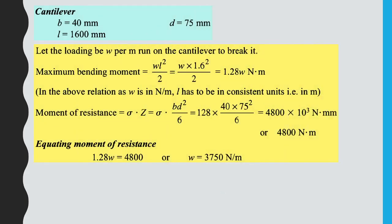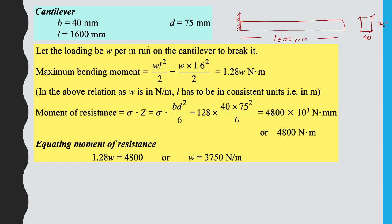For the cantilever beam with 40 mm width and 75 mm depth, the length is 1.6 m = 1600 mm. Let the UDL be W per meter run. The maximum bending moment for a cantilever is WL²/2 = W × 1.6²/2 = 1.28W N·m.